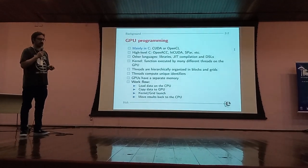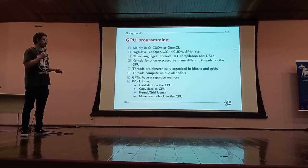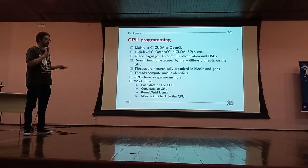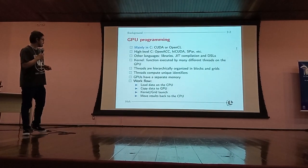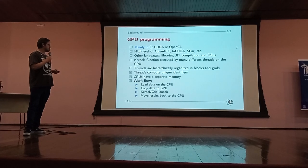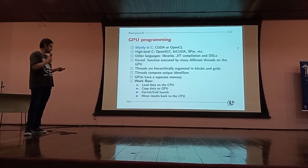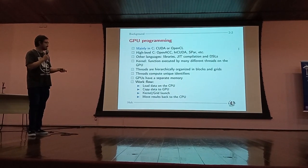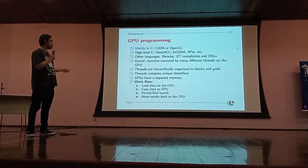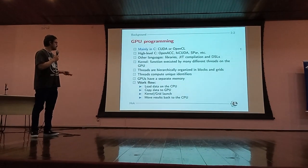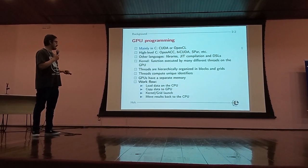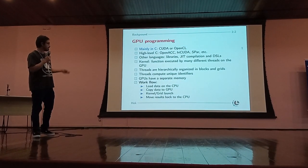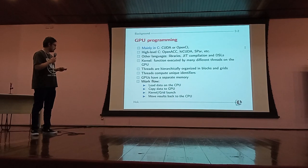Usually a thread computes a unique identifier that it uses to access certain parts of arrays. GPUs have separate memory, so the typical workflow is: load data on the CPU, copy the data to the GPU, launch the kernel and grid, and after finishing computing, move results back to the CPU.